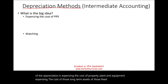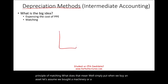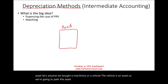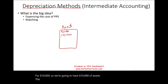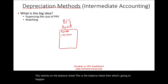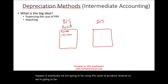Under the principle of matching, what does that mean? Simply put, when we buy an asset — let's assume we bought a machinery or a vehicle — the vehicle is an asset. So we're going to park this asset. Let's assume we purchase a vehicle for $10,000, so we're going to have $10,000 of assets on the balance sheet. Eventually, we are going to be using this asset to produce revenue on the income statement.